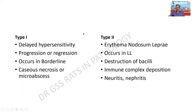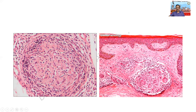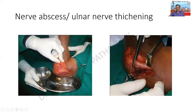There is another condition called hypersensitivity reaction in leprosy. There are two types. Type 1 is a delayed type of hypersensitivity - there can be either progression or regression of the disease. It usually occurs in borderline type of leprosy and there may be necrosis or micro-abscess formation. The other reaction is erythema nodosum leprosum, which occurs in lepromatous leprosy on treatment - there is destruction of bacilli and immune complex deposition. The patient can also develop neuritis and nephritis because of immune complexes.